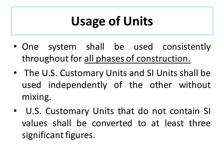Usage of units: One system shall be used consistently throughout for all phases of construction. US customary units and SI units shall be used independently of each other without mixing. US customary units that do not contain SI values shall be converted to at least three significant figures. All phases means from planning to closing phase of a project, the same system of units is to be used. If SI units and US customary units are both given, conversion from one to the other is not accepted. If SI units are not given, convert US customary units to three significant digits of SI unit.